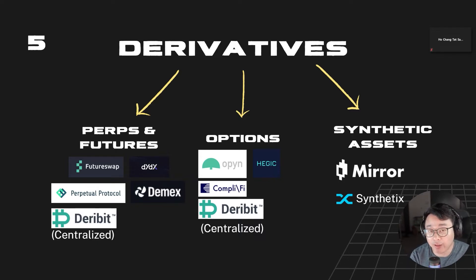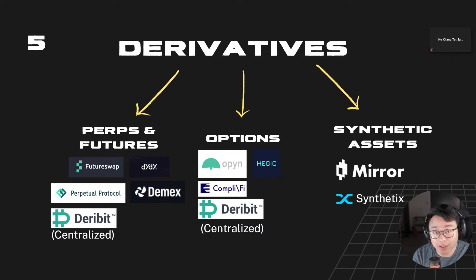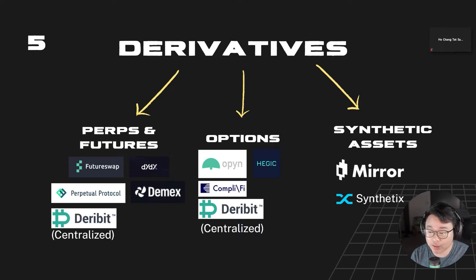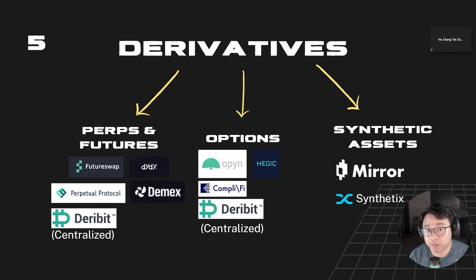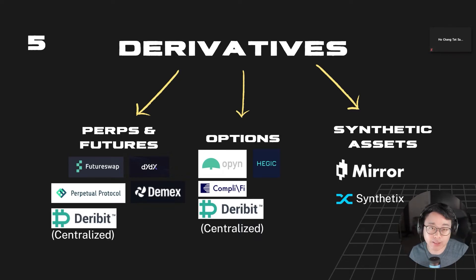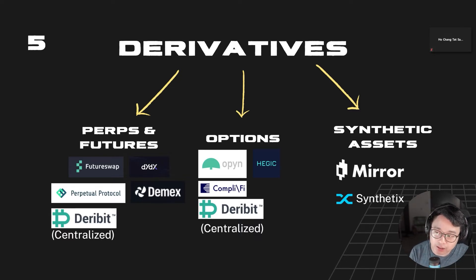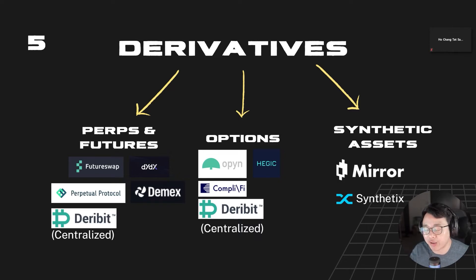Futures are similar to perps, except they have an expiration date — when it comes, the parties involved are obligated to trade with each other at their predetermined price. Popular decentralized derivatives platforms include DMEX, whose founders are from Singapore, and Deribit and Bybit are common centralized futures platforms. An interesting thing about futures is they often carry a premium, meaning the futures contract is worth more than the current spot price — for example, a September futures contract might be three to five percent above spot.